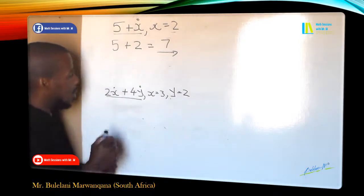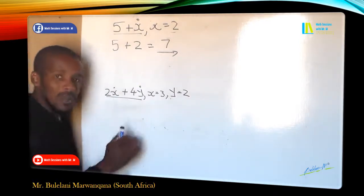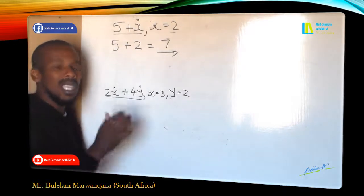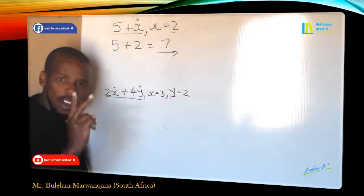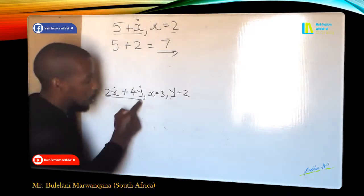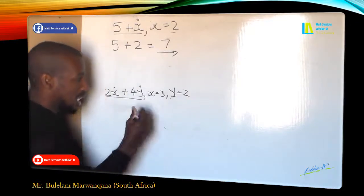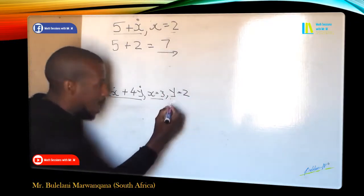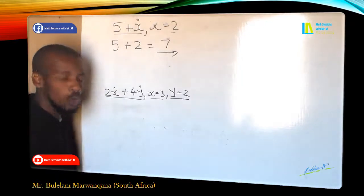When you evaluate two variables, basically we have 2X plus 4Y, so which means in this equation we have two variables which is X and Y. And we are given that X is equal to 3 and Y is equal to 2.